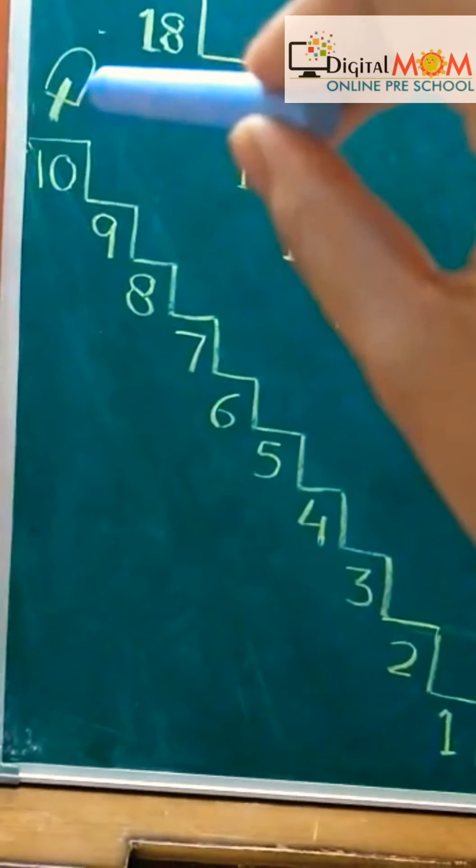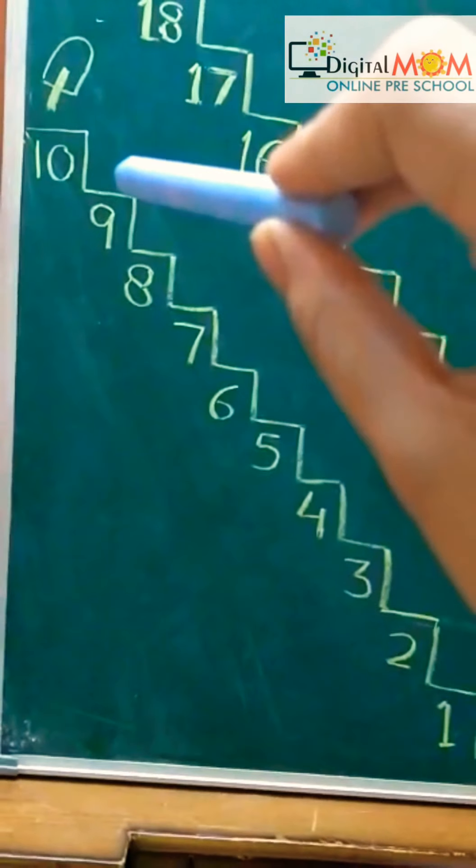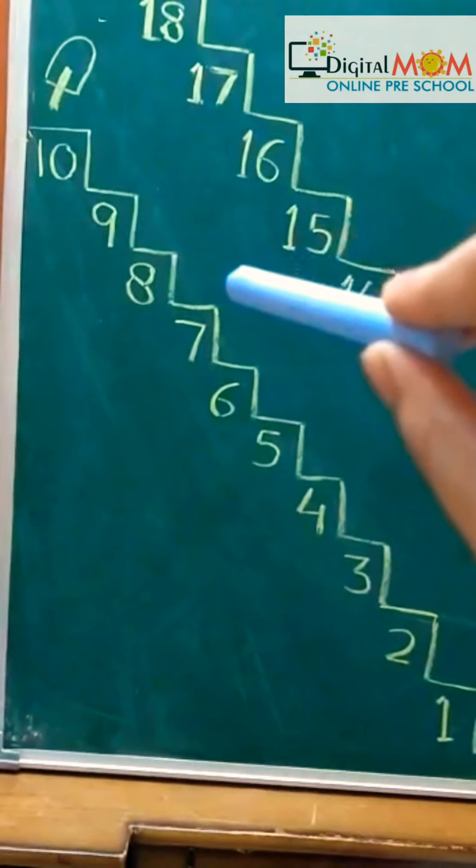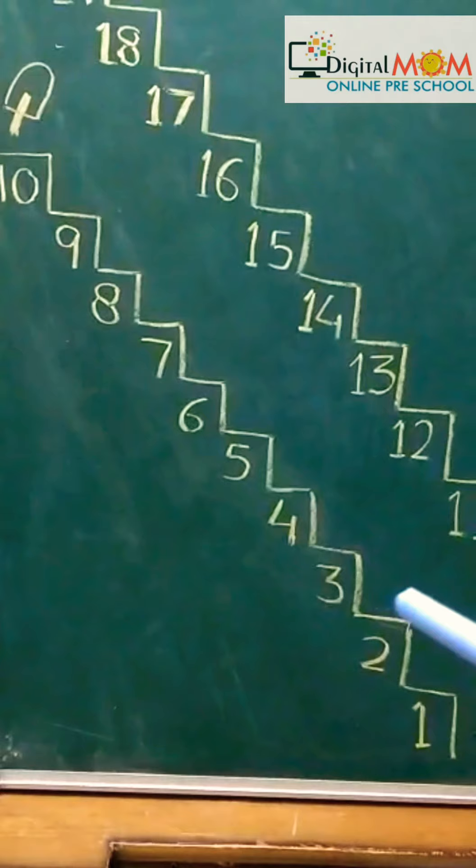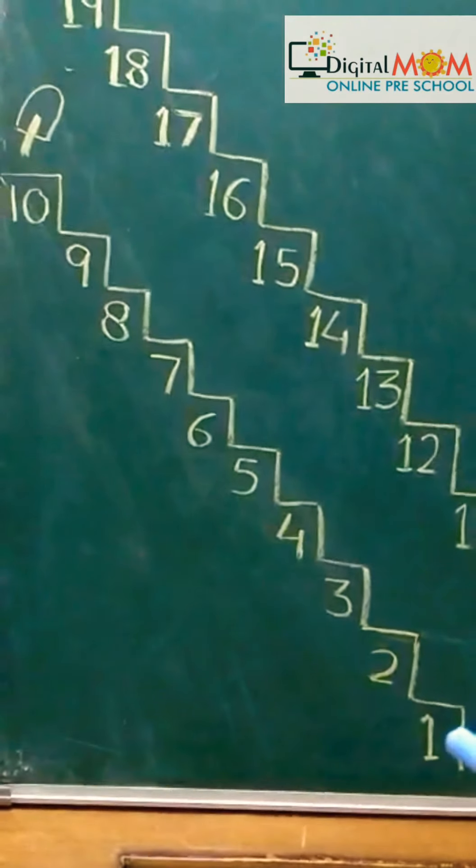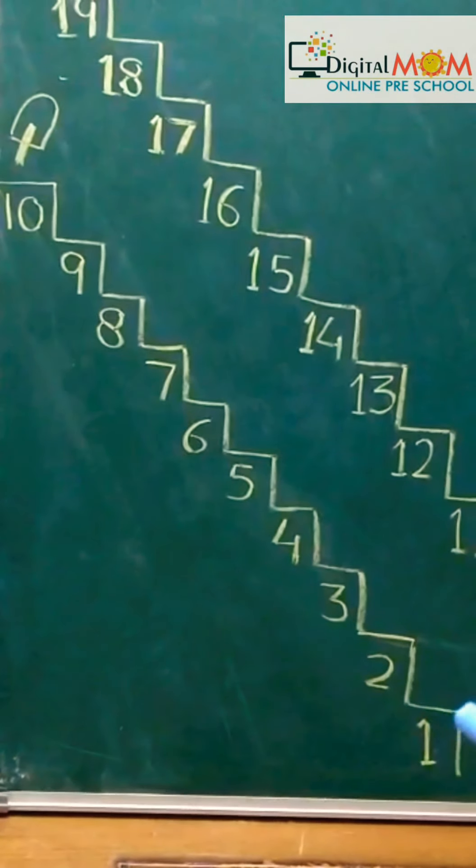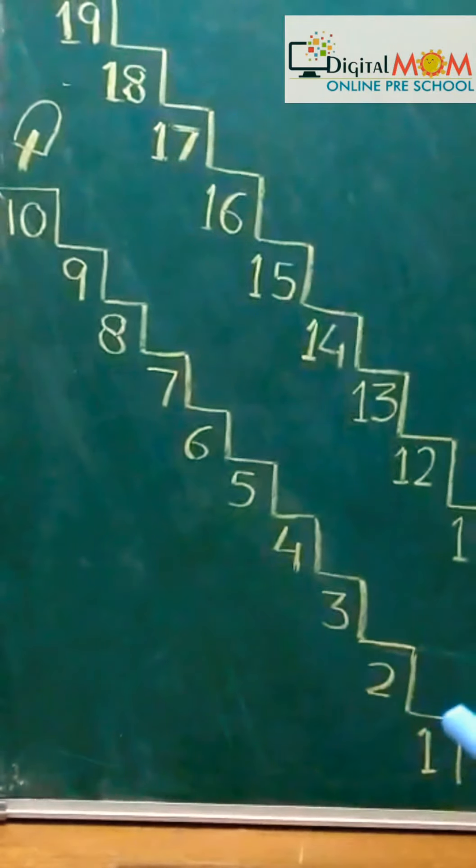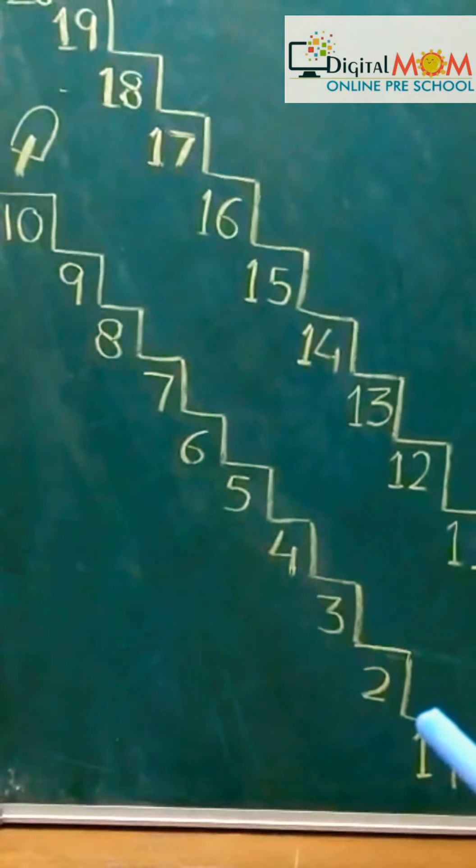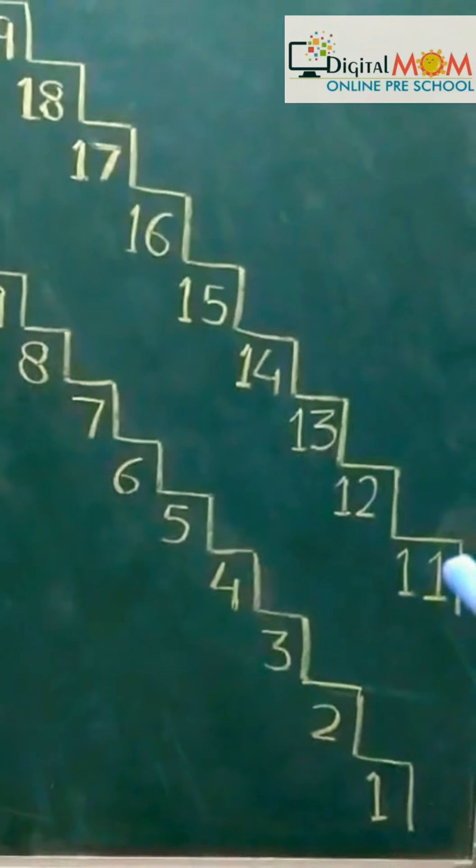We are standing at 10, so now we will count our step backward. 10, 9, 8, 7, 6, 5, 4, 3, 2, 1. Oh ho! We are back to our place.